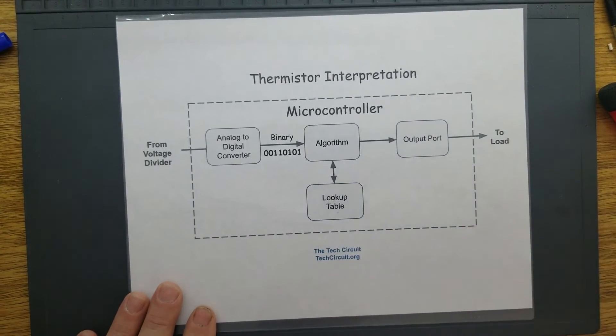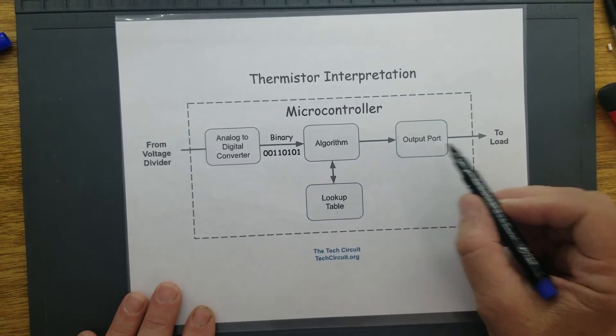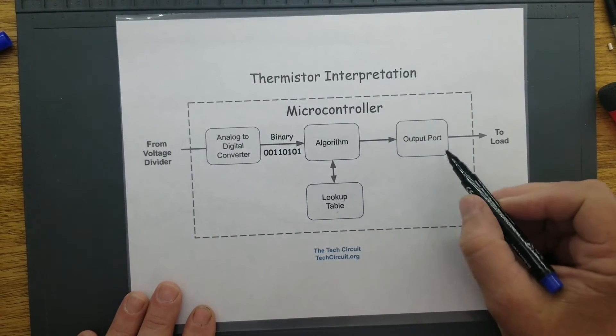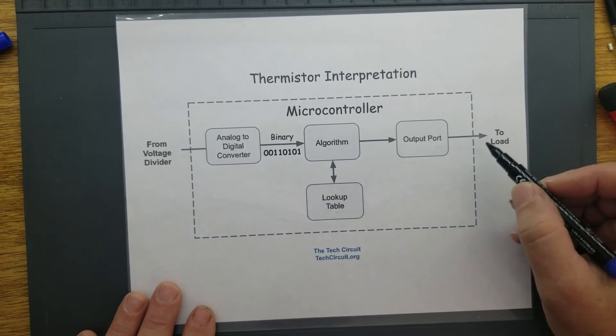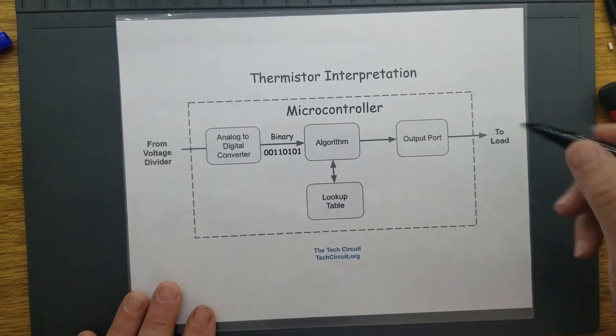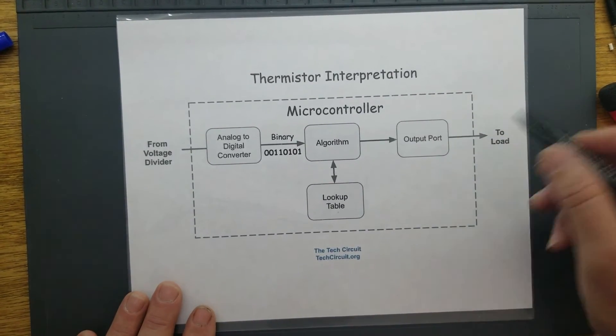Or the case of the refrigerator sensor, it might send a signal to the output port or a number of output ports to control, maybe a motor controller to open or close the damper, or turn the compressor on.